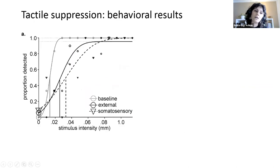Okay, so here are the behavioral results. So here on this graph, you see a proportion of detection responses as a function of stimulus intensity. We presented stimuli of different intensities. And we also fitted psychometric functions to the proportion of detection responses for each condition in order to get a detection threshold estimate.